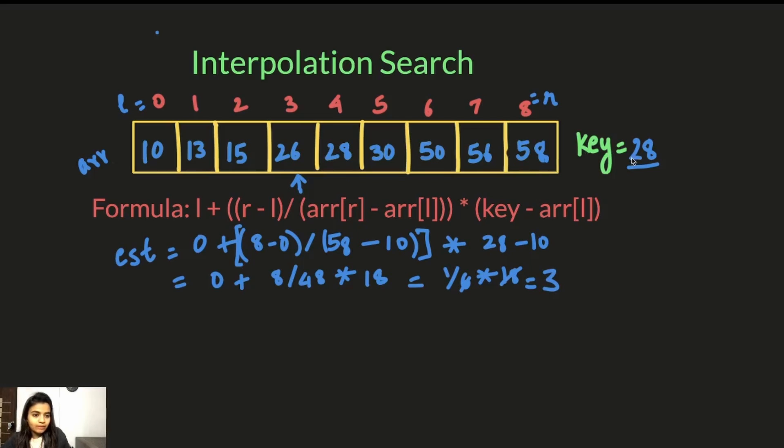But we compare the element with the key. Since the key is greater than the current element which we have found in index EST which is 3, we will choose the, we will break the array here. Then left will become 4 now.